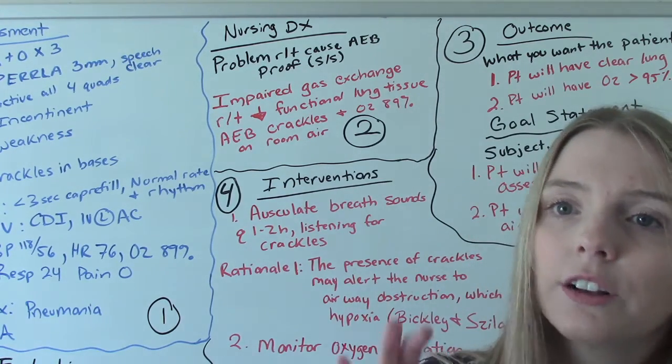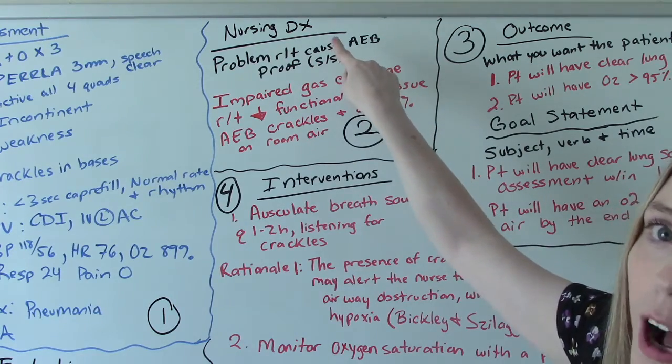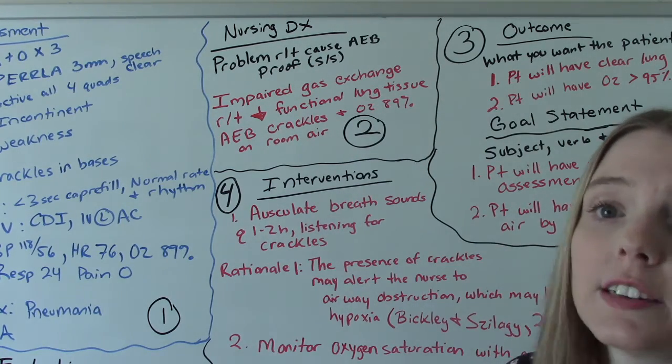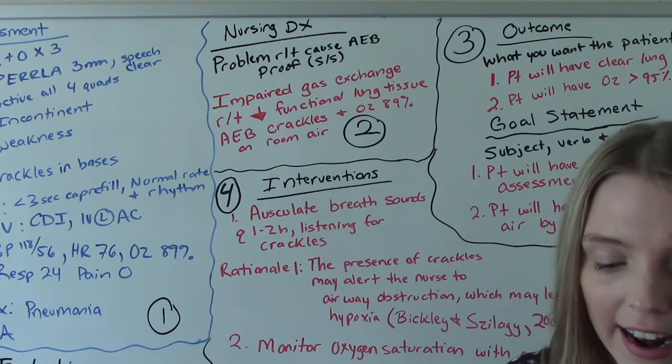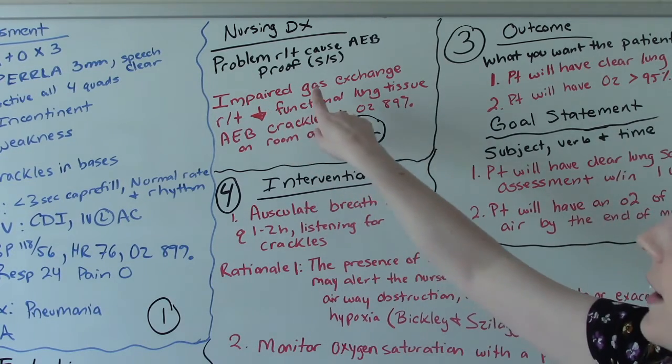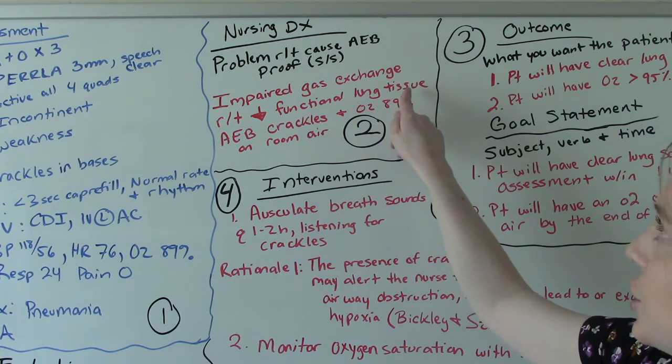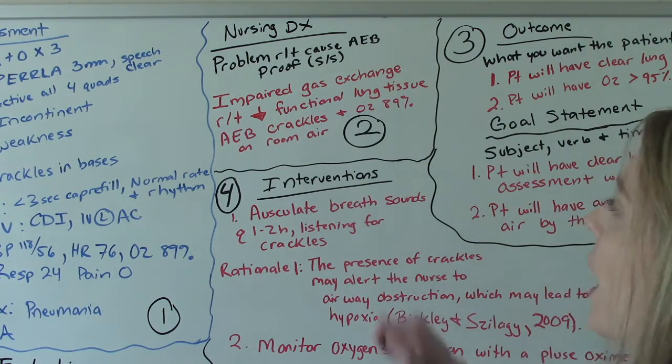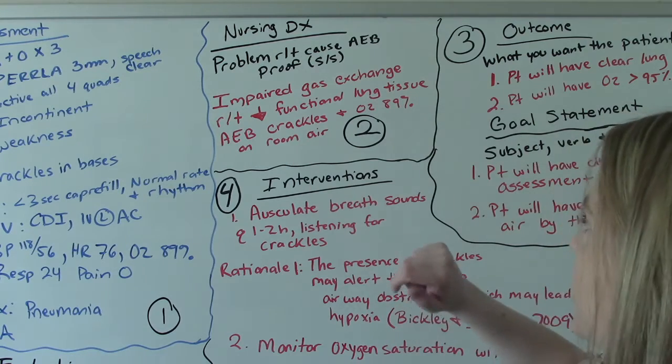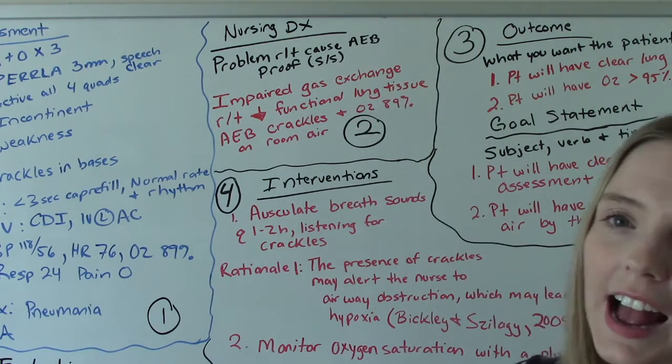All of our nursing diagnoses have the same formula, which is our problem related to the cause of that problem, which is the illness, as evidenced by, and then the proof, the proof that this is actually happening to them. Those are our signs and symptoms. So when I went to the book and I saw the potential diagnosis, I decided I liked this one. So I chose impaired gas exchange, so that's our problem, related to decreased functional lung tissue, so that's the cause of the impaired gas exchange, and then our proof as evidenced by how do we know this is happening, because we can hear crackles upon auscultation, and then their O2 stat is only 89% on room air. So this is our formal nursing diagnosis for our patient.